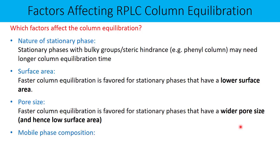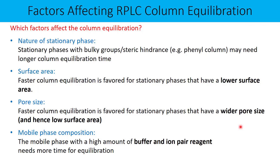What is the role of mobile phase composition? A mobile phase with a high amount of buffer and ion pair reagent needs more time for column equilibration, because more time is required to establish equilibrium between the stationary phase and the mobile phase due to the buffer concentration. Especially if there is an ion pair reagent present, it also has to get equilibrated onto the stationary phase, which may take longer. So one must consider additional column equilibration time especially in ion pairing reagent methods.